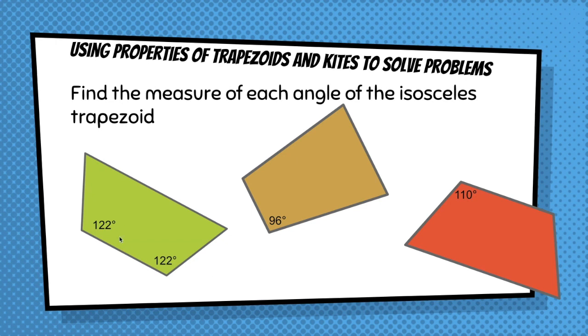Okay, so we know that the base angles are congruent. What else do we know? We know that these two angles would be consecutive interior angles because you have two parallel lines cut by a transversal, so they're going to be supplementary. The same pattern is true for these other isosceles trapezoids.